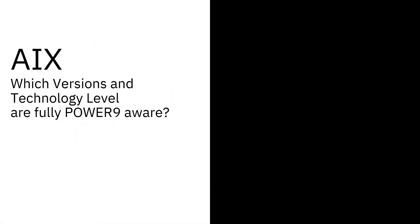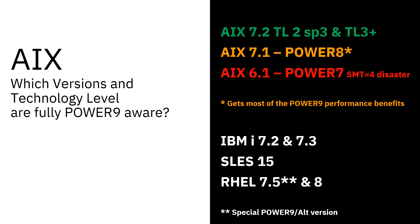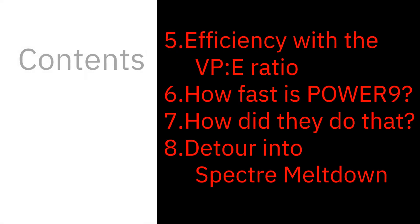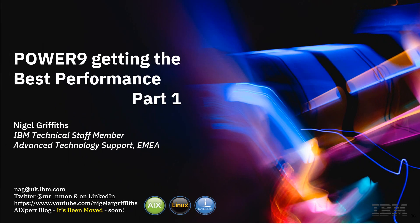Which versions do you need to be at so that it understands it's a Power9 chip and can benefit from it? Here are the versions for AIX 7.2 TL1 — it doesn't understand Power9, but Power8 mode will give you lots of the performance in Power9. AIX 6.1 doesn't get the idea of it at all. Here are the other operating systems — notice Red Hat needs to be at 7.5, but with a particular different installation image called Alt. That's it for part one. We've looked at the first four items. We're next going to go into some more technical details about the Power9 chip itself — in particular the efficiency with the virtual processor to entitlement ratio, how fast a Power9 chip is, and how IBM achieves that in their development labs. We'll do a slight detour at the end to look at what you need to know about Spectre Meltdown. If you enjoyed this part one, please give us a thumbs up and don't forget to subscribe.